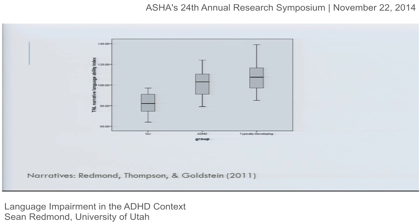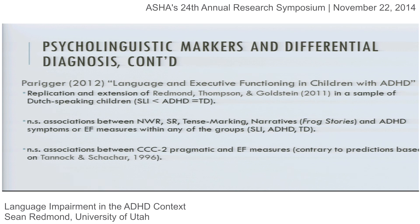After that report came out, there was a nice replication in a Dutch sample by Parajur, who also included executive functioning measures and asked whether executive functioning would predict weaknesses in language abilities. Their results basically replicated what we found — non-word repetition, sentence recall, tense marking, and narratives were not associated with ADHD status, and there was no significant correlation between those measures and executive function. A prediction had been out there that language impairments in children with ADHD might be linked to executive function problems, particularly pragmatic difficulties — that was also not found.